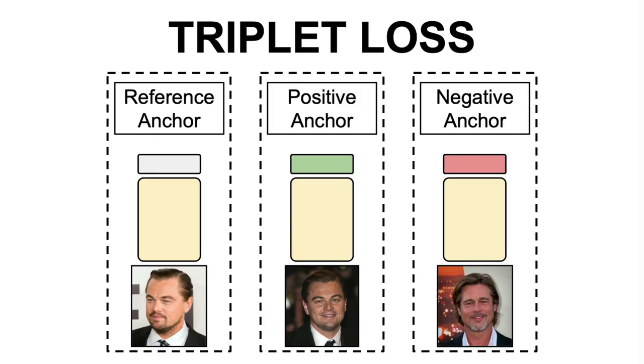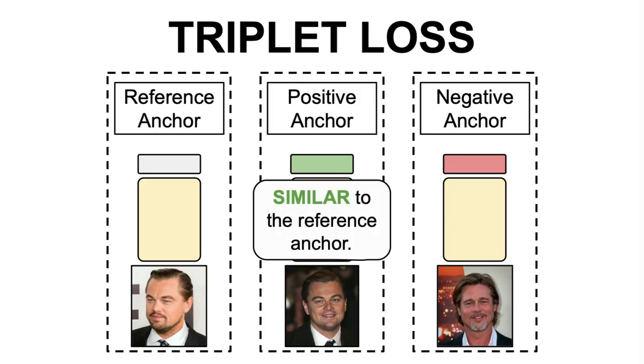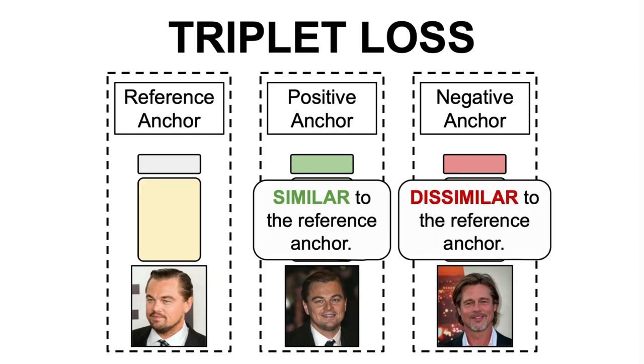The positive anchor is an example similar to the reference anchor, while the negative anchor is an example dissimilar to the reference anchor. By doing this, the triplet loss aims to enhance the discrimination capability of the network, pushing it to learn more discriminative and robust features.